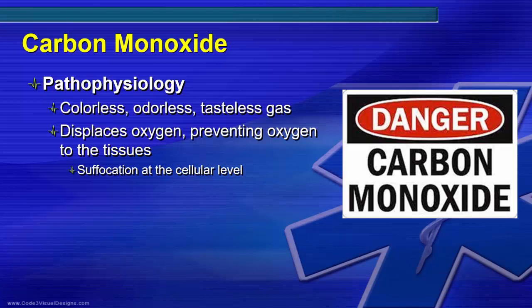The issue with carbon monoxide is that it displaces oxygen, which prevents oxygen to the tissues, causing cellular asphyxiation or suffocation at the cellular level. Any increase in the body's metabolic or oxygen demands will increase the severity of the poisoning — these include tachycardia, fever, or exertion. CO displaces oxygen from the hemoglobin molecule in the red blood cells because of its greater affinity for binding to hemoglobin. Even relatively small concentrations of CO can convert hemoglobin into carboxyhemoglobin, making it ineffective as an oxygen carrier.